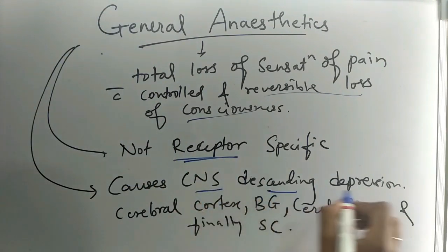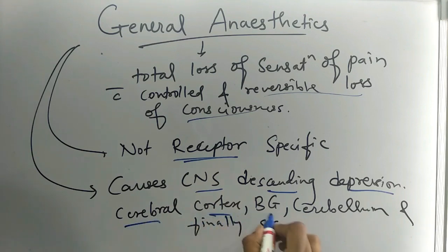It causes CNS descending depression: cerebral cortex, basal ganglia, cerebellum, and finally spinal cord.